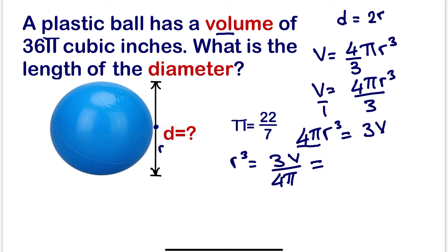If we move further, we are going to substitute now the value. 3V is 3 times the value, which is 36π, divided by 4π.